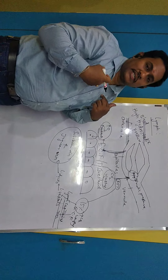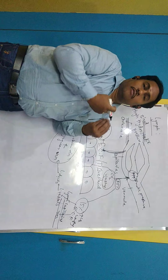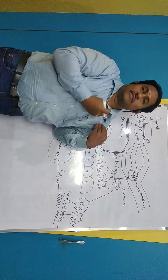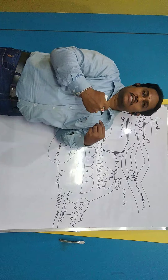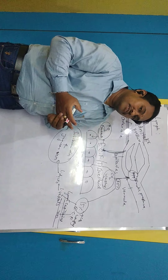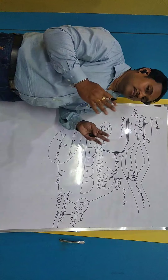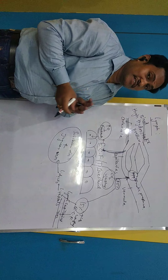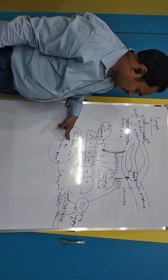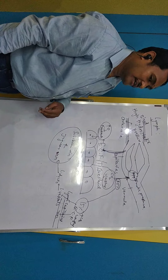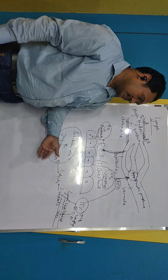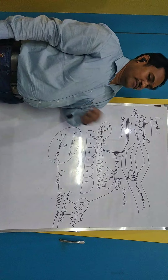Lymph capillaries connect to form lymph vessels, and lymph vessels form lymph ducts. All the lymph ducts become large lymph ducts near the thorax region — one on the left side and one on the right side, called the right thoracic duct and left thoracic duct. These thoracic ducts carry the lymph and release it into large blood vessels called the subclavian vein and jugular vein.